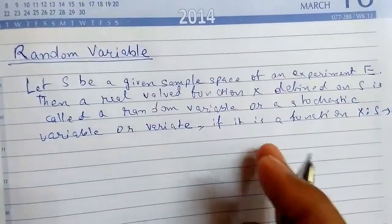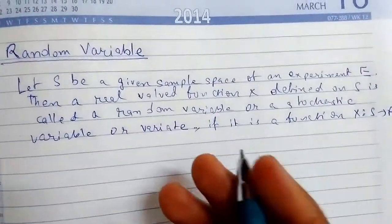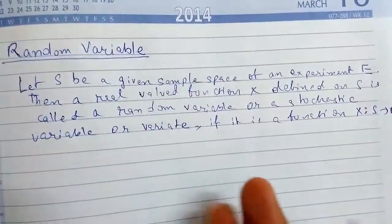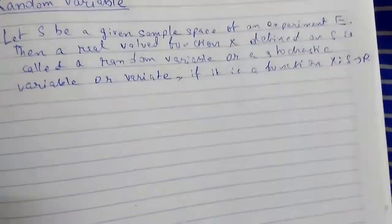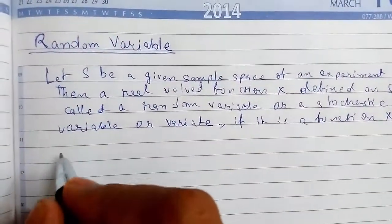So the range of function x, that is the set of all values assumed by x, are called the spectrum of the random variable. So I will just explain something like this.